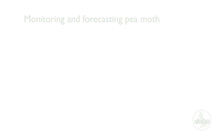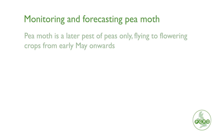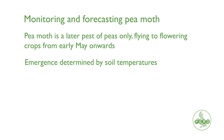Moving on to another pest of peas in particular — we have a well-established system for monitoring and predicting sprays for pea moth in peas. Pea moth is a later pest that emerges from the beginning of May onwards. It overwinters as cocoons in the soil and it's soil temperatures that determine when that emergence is going to occur. In recent years we have seen a slight shift in the movement of pea moth from soils from approximately the middle to the end of May to the beginning of May.